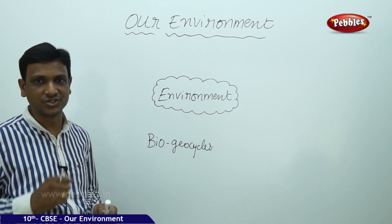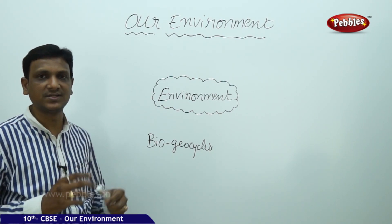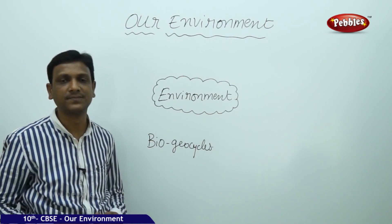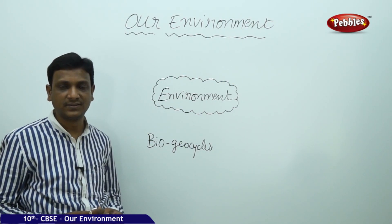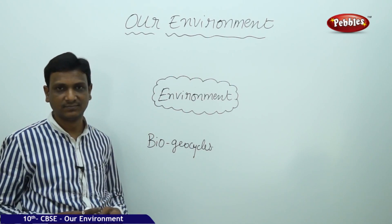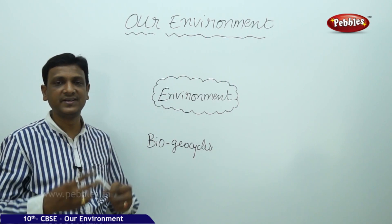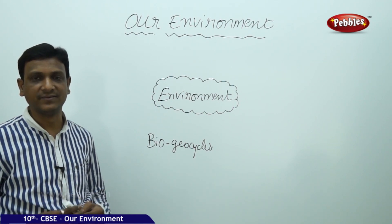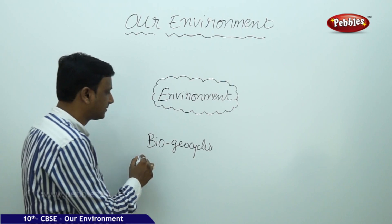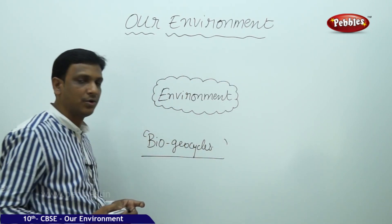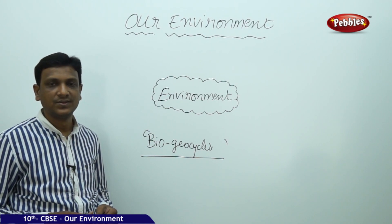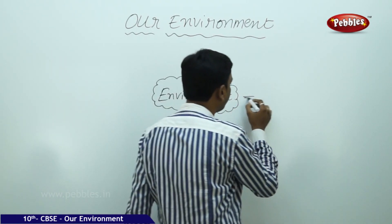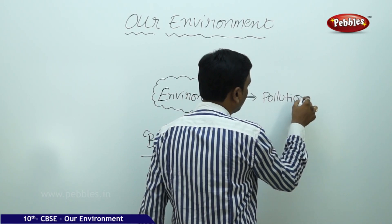This all happens naturally — the cycling of materials takes place through natural processes. But with human intervention, through aggressive human activities toward development, we are doing so many activities which are disturbing these biogeocycles. So what does this disturbance cause? It mainly causes pollution in the environment.